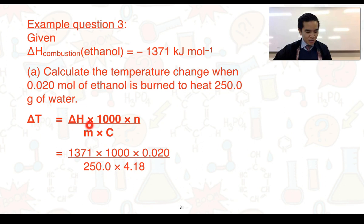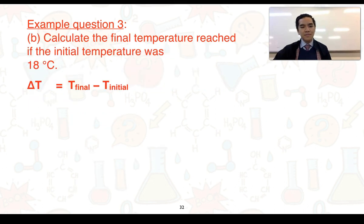This is going to be multiplied by a thousand, converting the kilojoules per mole into joules per mole, multiply that by the number of moles of our ethanol burned, divide that by the mass of the water that's undergoing temperature change and the specific heat capacity of water. If we do this we should get an answer close to 26 degrees Celsius to two significant figures.